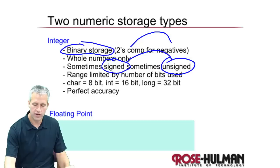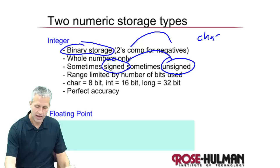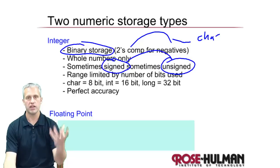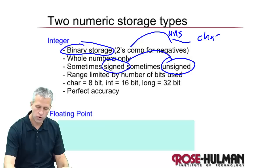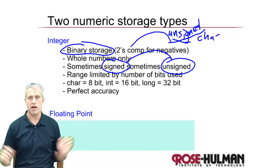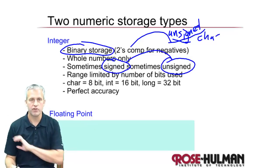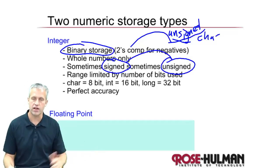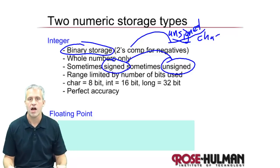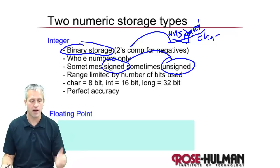Every time you write the word char, you actually have a word in front that's either signed or unsigned. If you leave it off, it defaults to signed. But if you wanted to, you could write the word unsigned. That gives you a bigger range of positive numbers, but you can't use any negatives at all. Sometimes people use unsigned char, unsigned int, or unsigned long to give themselves more positive numbers when they know the value is positive.